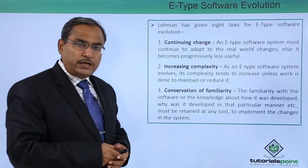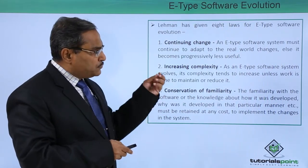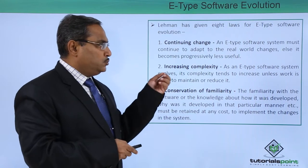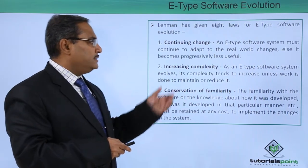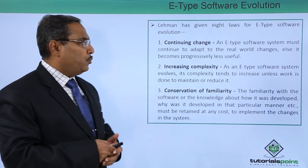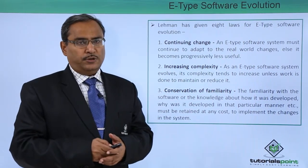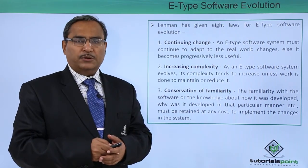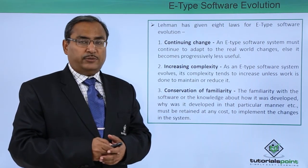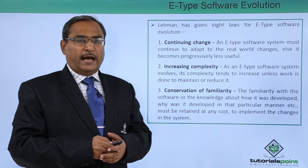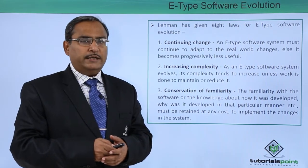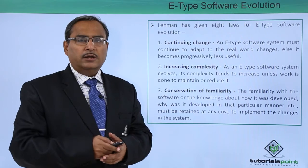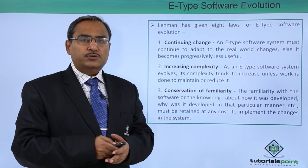The first law is continuing change. An E-type software system must continue to adapt to real world changes, else it becomes progressively less useful. Change requests will be coming from the client and from the users, and those change requests have to be implemented in the software. Otherwise, in the long run, the software will become useless.